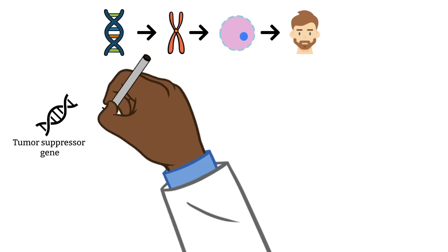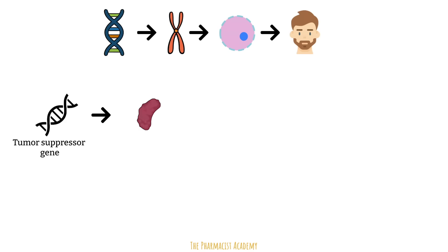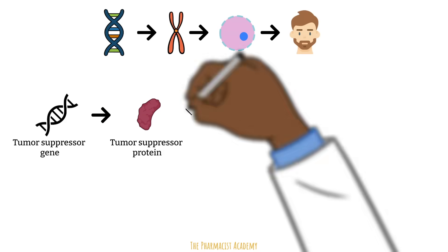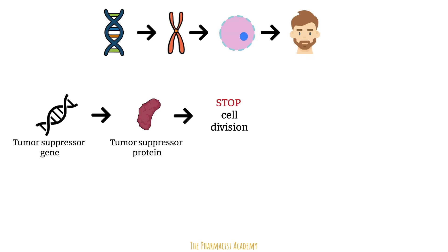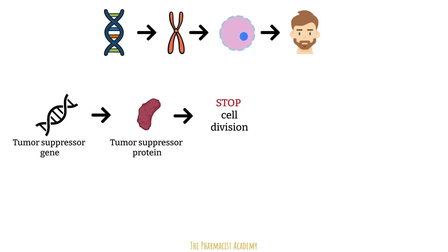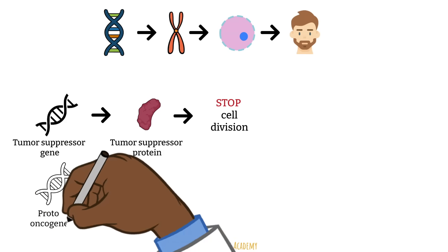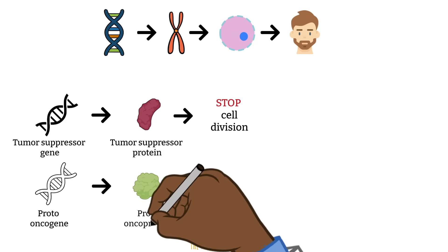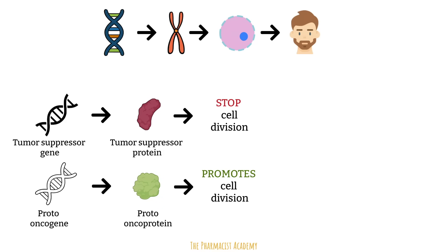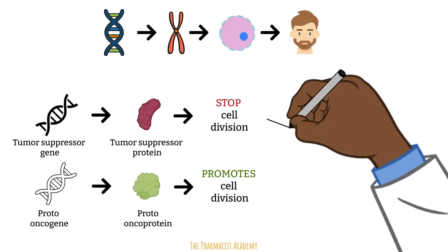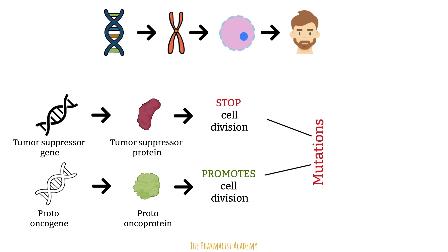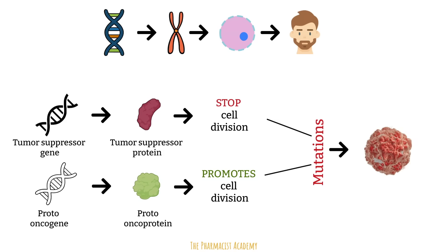First is the tumor suppressor gene, which encodes for a tumor suppressor protein, and this protein will stop cell division. It's really meant to prevent cells from dividing uncontrollably. Then you have the proto-oncogene, which encodes for a protein that promotes cell division. Cell division is needed to replace damaged cells with new cells. Mutations in any of these proteins can lead to abnormal growth of cells that form a mass, also known as a tumor.